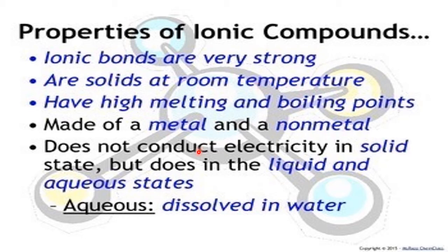Ionic compounds have high melting and boiling points because they are formed by a strong attractive force. When the attractive force is strong, a lot of energy is required to separate the ions. For example, in sodium chloride, a strong bond exists between the sodium plus ion and the chlorine minus ion. To separate them, you have to supply a lot of heat energy — that is why ionic compounds have high melting points. And once they become liquid, they also require more energy to boil.